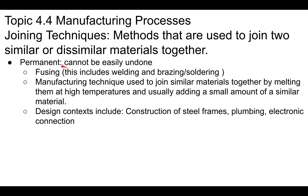Another permanent joining technique is fusing — welding or brazing. You're essentially melting two materials, usually made of the same thing, at high temperature to join them together. You can also do this by soldering, which can join dissimilar materials. Design contexts include the steel frame of a big building or a ship, plumbing, and electronic connections in devices — all examples of permanent fusing.